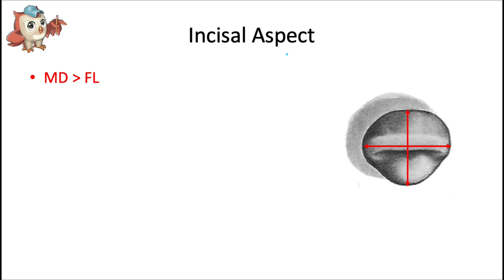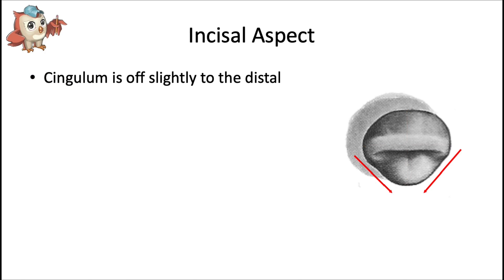From the incisal aspect, the mesiodistal dimension is larger than the faciolingual dimension. Also, the cingulum is slightly off-centered to the distal, and this corresponds to the shape of the arch — having the cingulum slightly off-centered helps to fit all the teeth into the U-shaped arch.